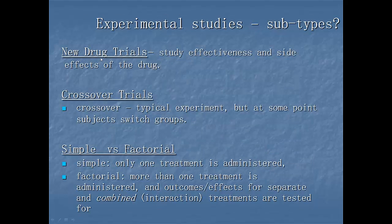Subtypes, new drug trials, crossover trials, simple versus factorial. So these are more subtypes. New drug trials are the same as clinical, also known as clinical trials. We study effectiveness and side effects. So there's two outcomes. Various outcomes. So you can see effectiveness and side effects.